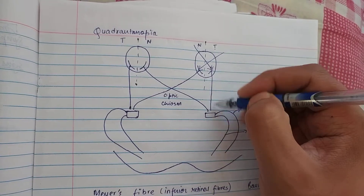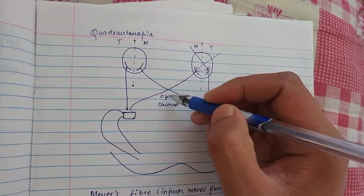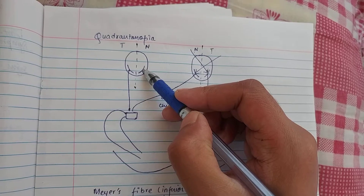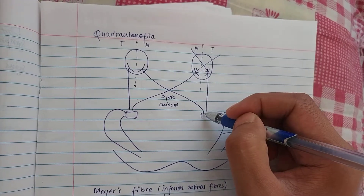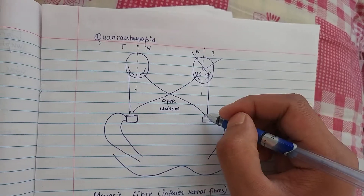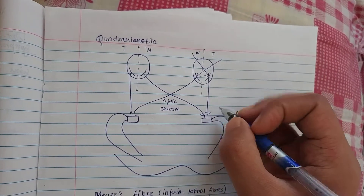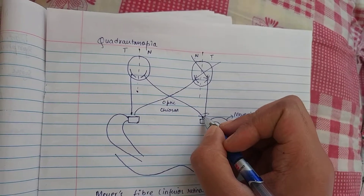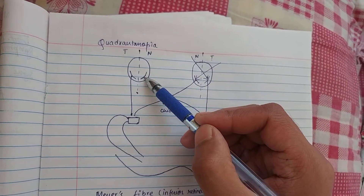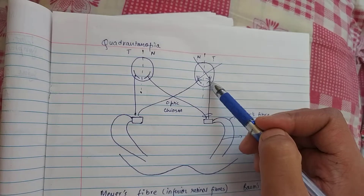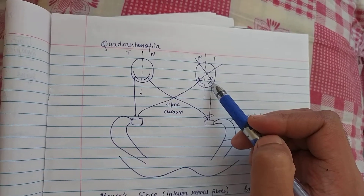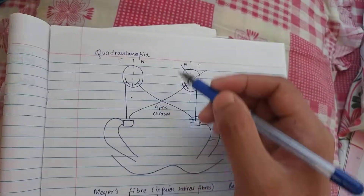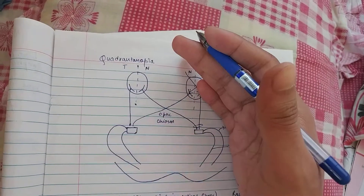The temporal fibers do not cross, whereas the nasal fibers cross at the optic chiasm. The nasal retinal fibers from the left eye will join the right-sided optic tract, which carries information from both nasal retinal fibers of the left eye and temporal retinal fibers of the right eye — so information from the left side of the visual field travels in the right optic tract.